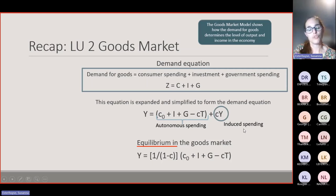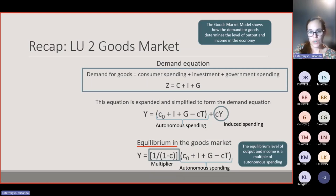We moved forward to calculate equilibrium in the goods market, where demand for goods equals the level of output and income. The equilibrium equation shows that the equilibrium level of output and income is a multiple of autonomous spending: Y = [1/(1-c₁)](c₀ + I + G - c₁T). The term [1/(1-c₁)] is the multiplier.